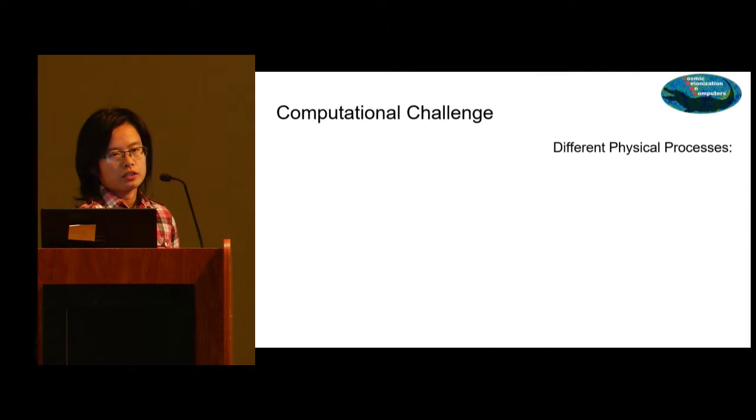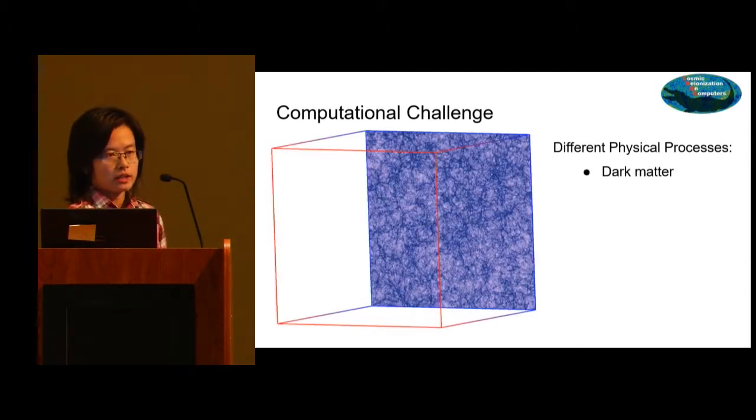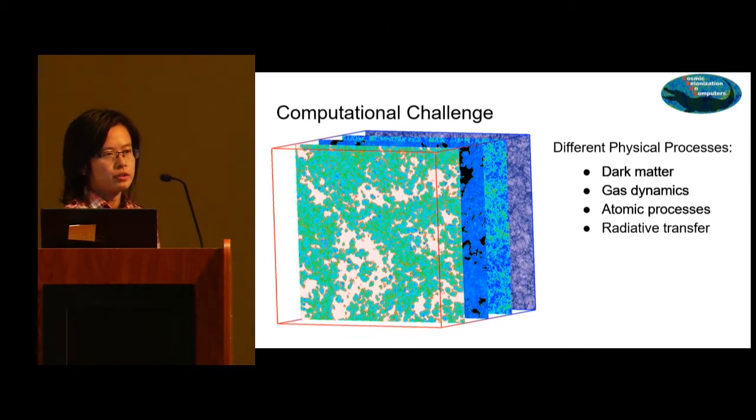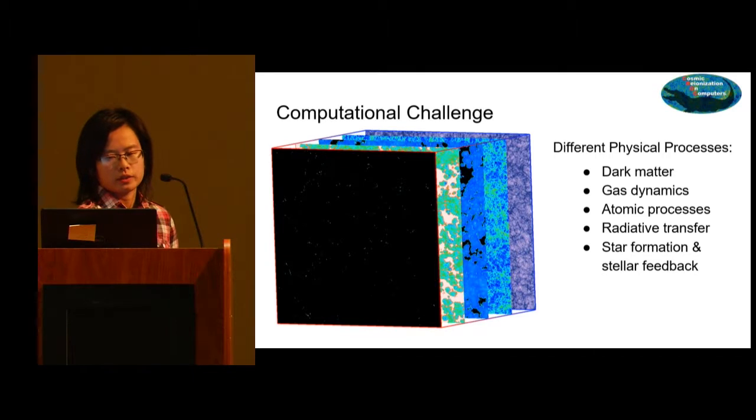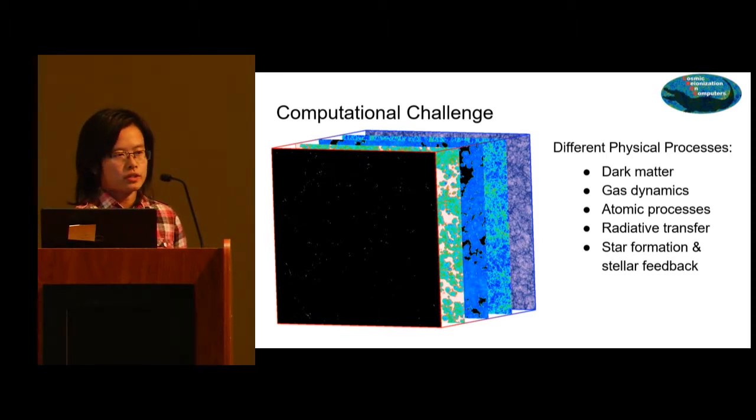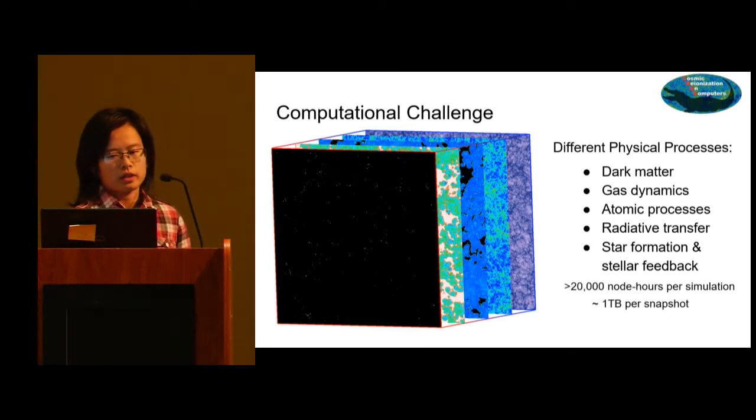To model this problem, I need a thousand root grids and seven levels of refinement. We need to model different physical processes: dark matter, which drives large-scale structure formation; gas; atomic processes and radiative transfer to calculate the temperature and ionization fraction of the gas; and star formation and stellar feedback subgrid models to get star particles and calculate synthetic observables. All these different physical processes are coupled together, so it's very computationally expensive, especially the radiative transfer. For one hydro step, we need to iterate at least 30 RT steps.